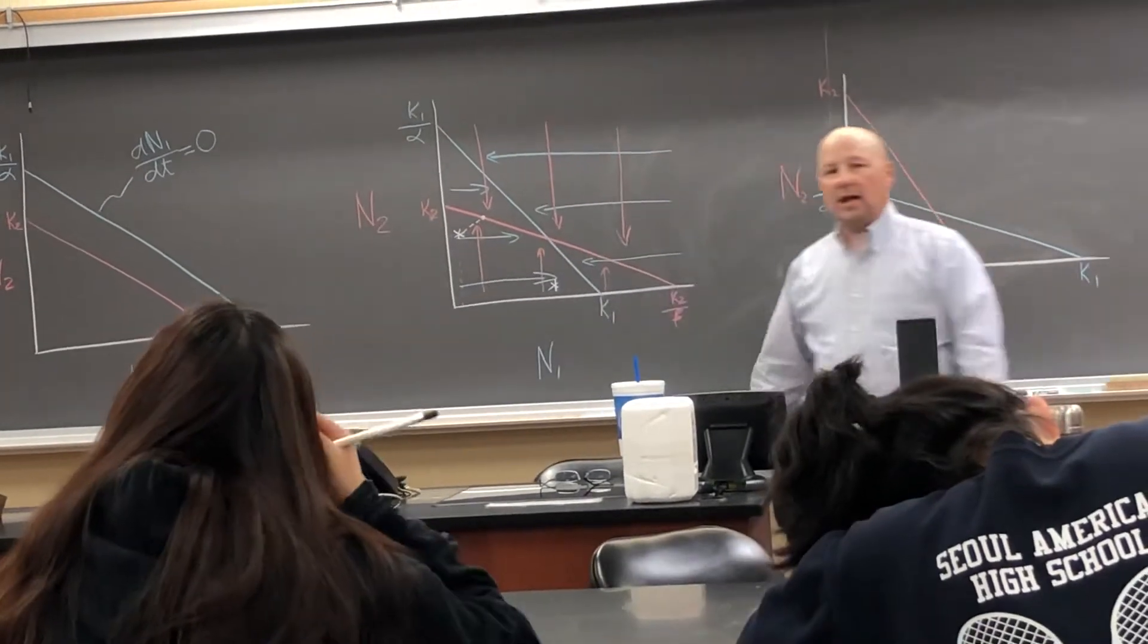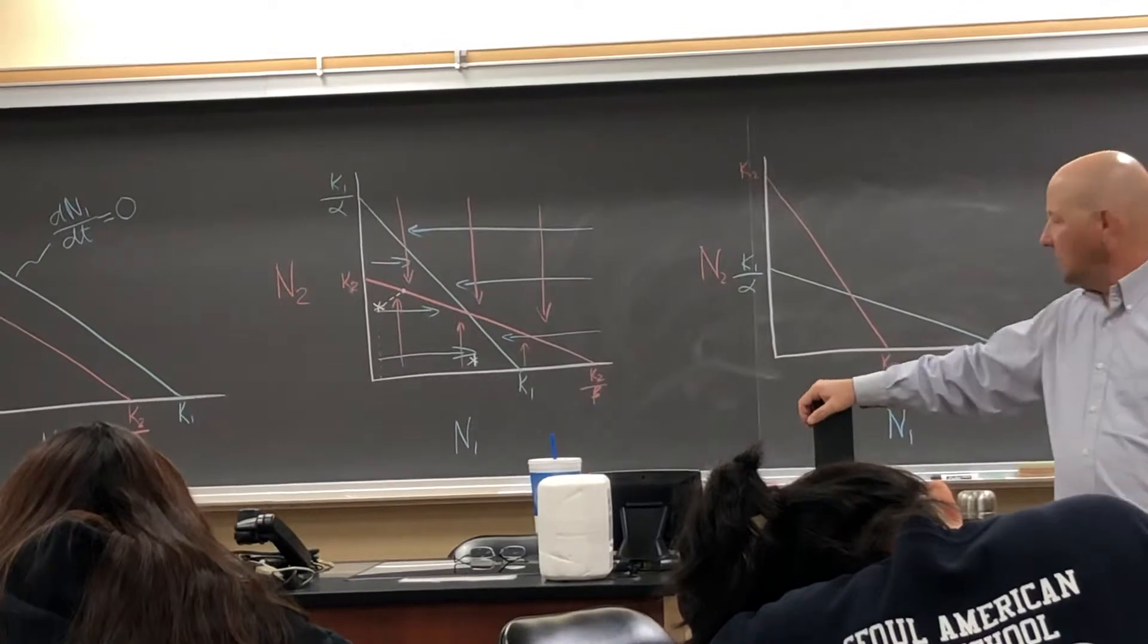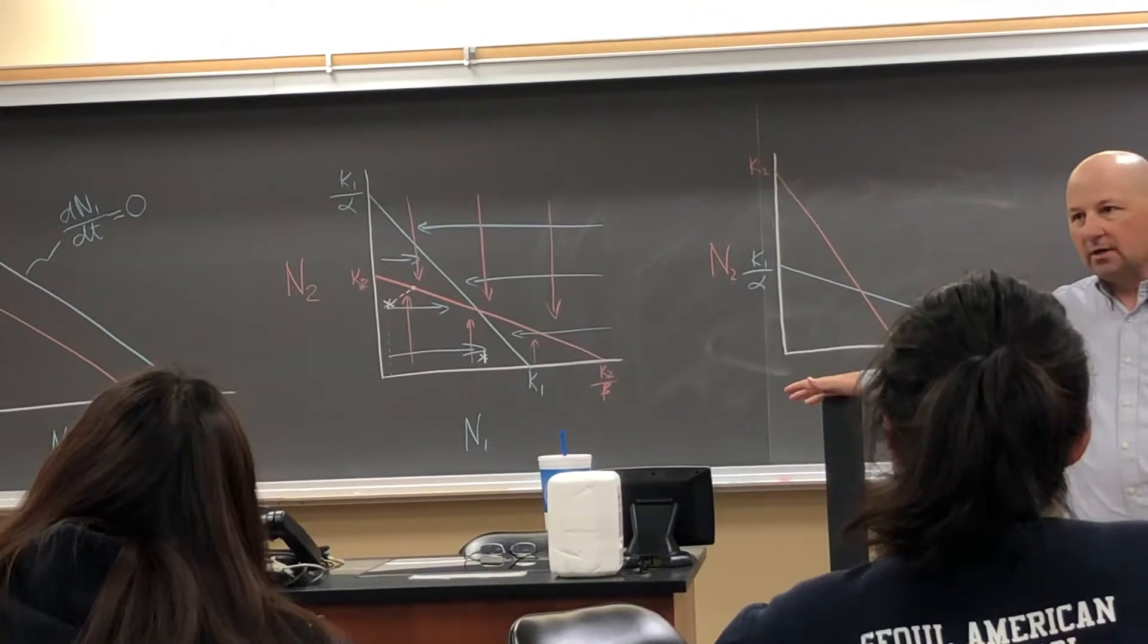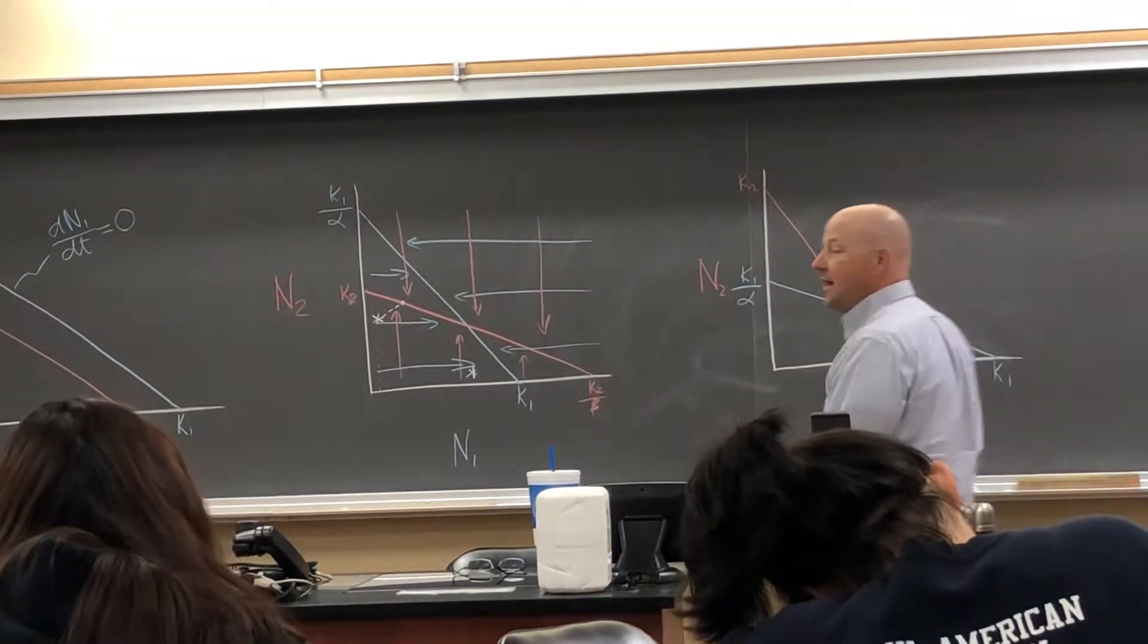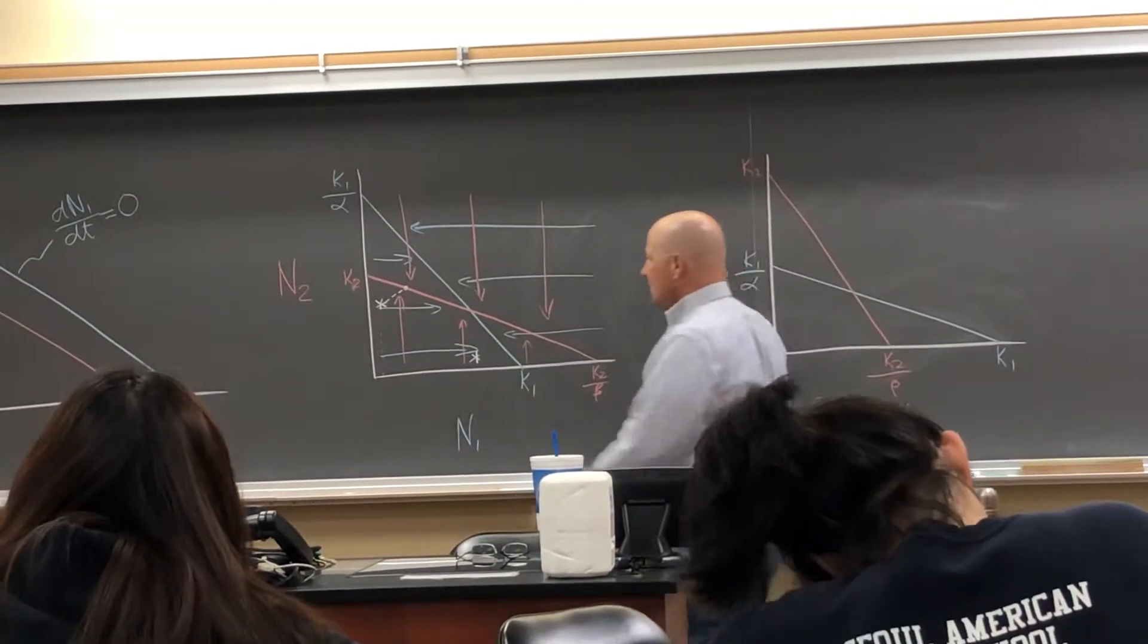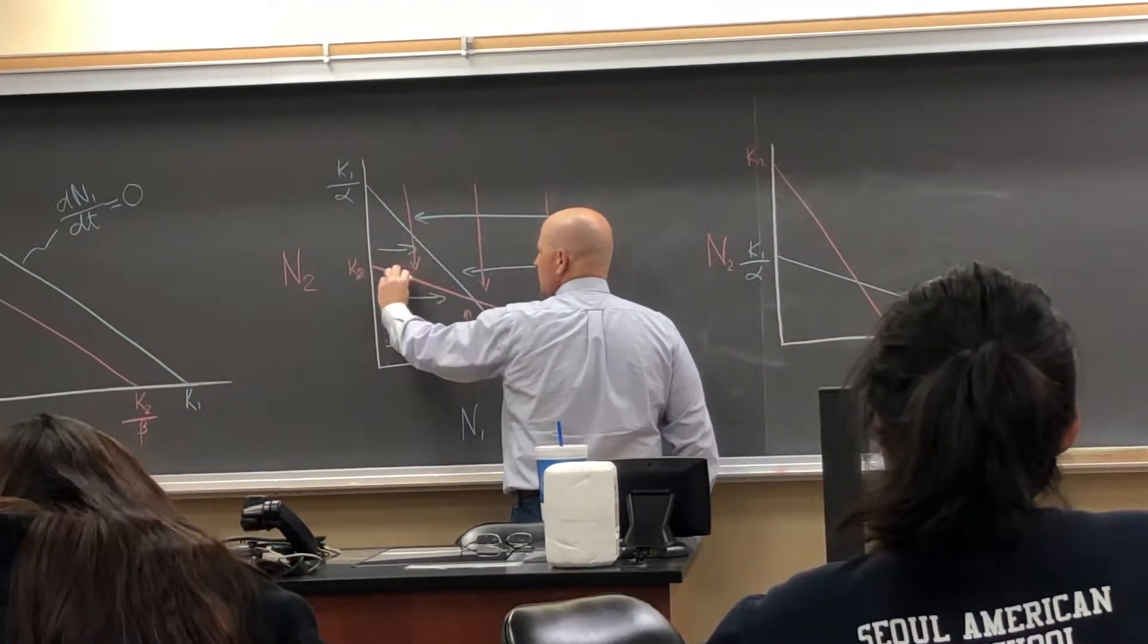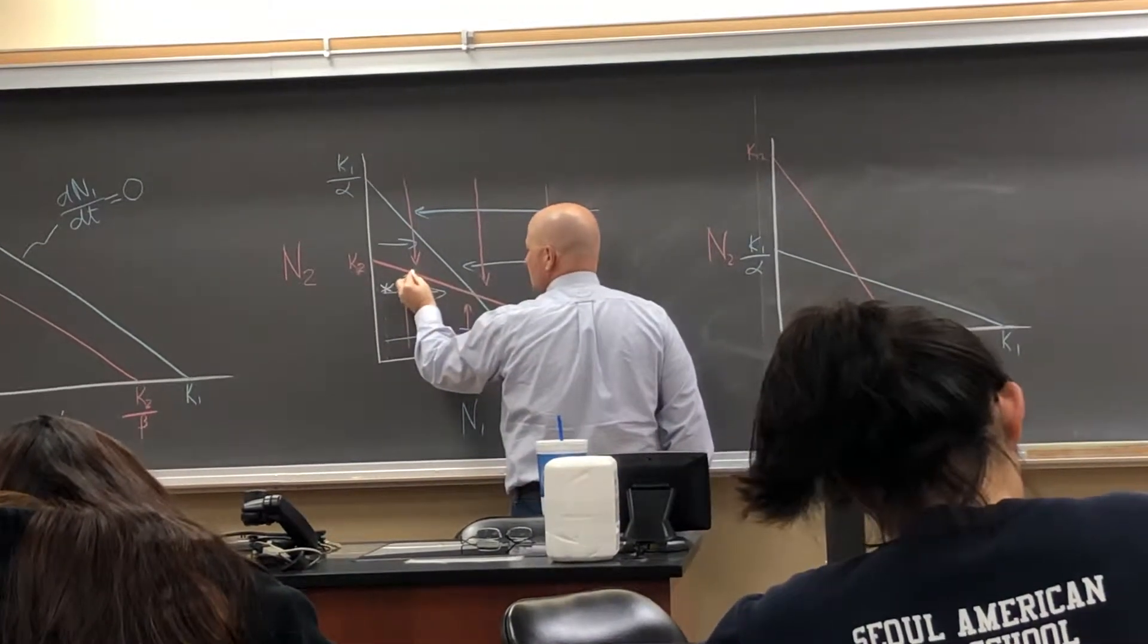Once we get here, we've hit the red line. What happens to population 2 once we get to that red line? It stops growing. That's zero growth for that. How about population 1? Still room to grow. So this is not going to go up anymore, right? But we're still going to be going to the right. Population 1 is still growing.